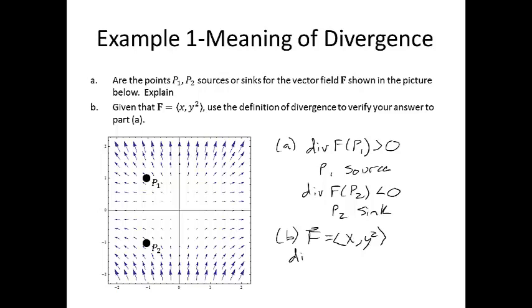So the divergence of the vector field is going to be equal to the partial derivative of the first component with respect to x, so 1, plus the partial derivative of the second component with respect to y, which is 2y. Divergence of f is equal to 0 when 1 plus 2y equals 0 when y equals minus 1 half.